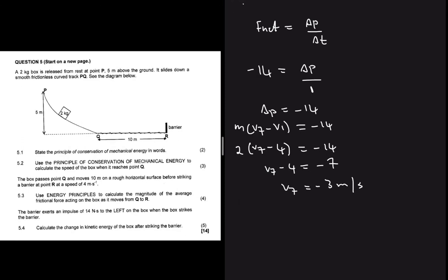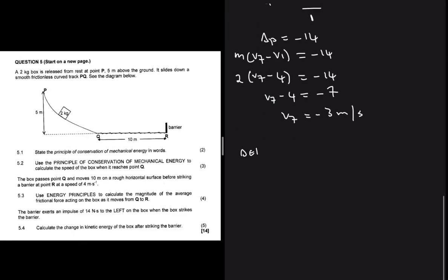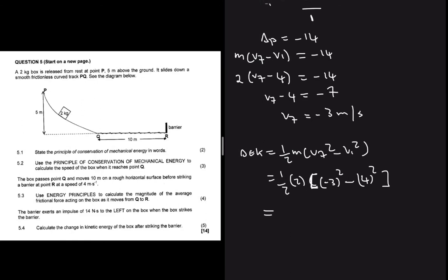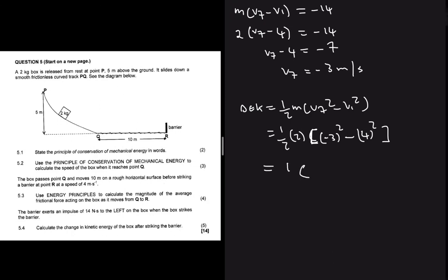But we're also interested in the change in kinetic energy: delta KE equals one-half m times (vf squared minus vi squared) equals one-half times 2 kg times ((-3) squared minus 4 squared). That gives us one-half times 2 times (9 minus 16) equals one-half times 2 times minus 7, which equals minus 7 joules. That's it for the question — thank you for watching, don't forget to like and subscribe, and check out the other videos on the channel.